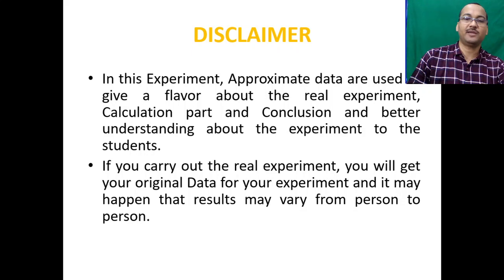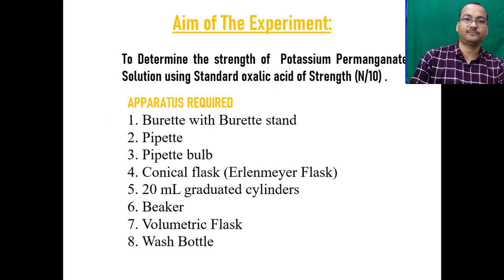If you carry out your own experiment you will get your own original data, and the result may vary from person to person. The aim of the experiment is to determine the strength of potassium permanganate solution using standard oxalic acid of strength N/10.